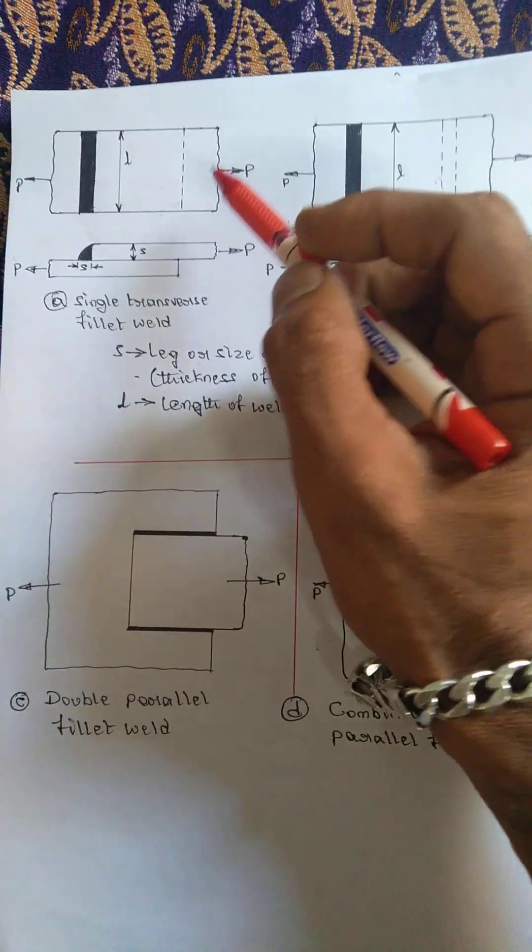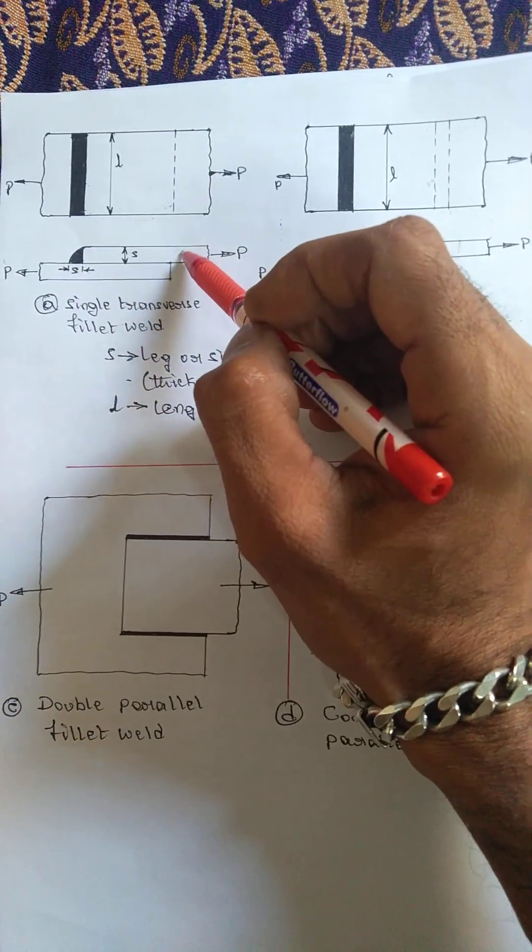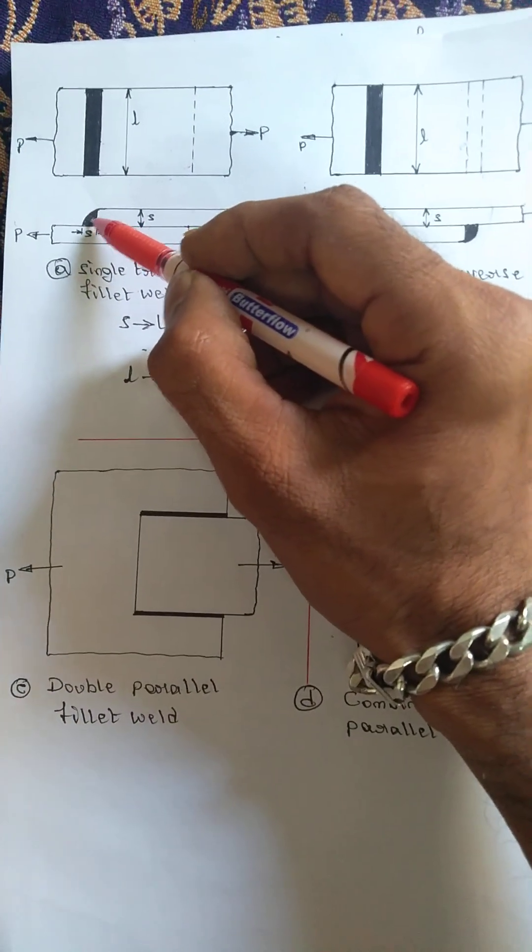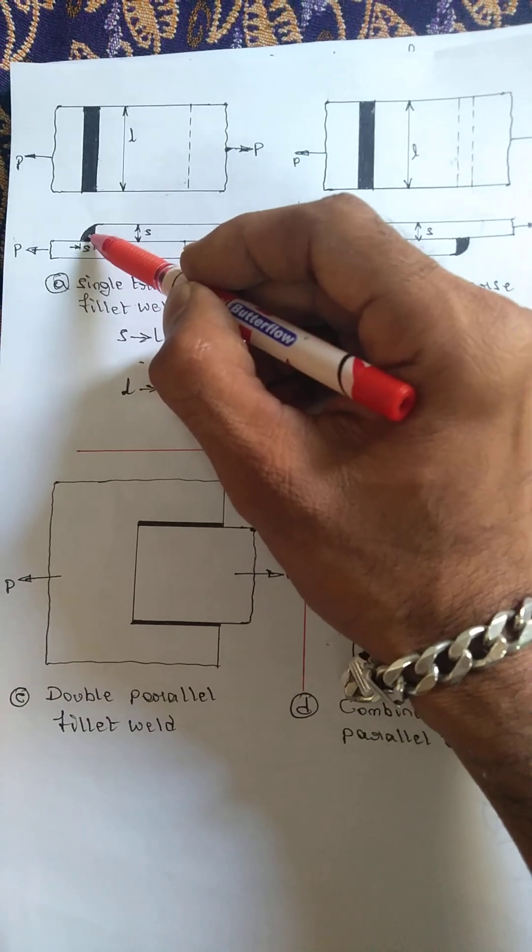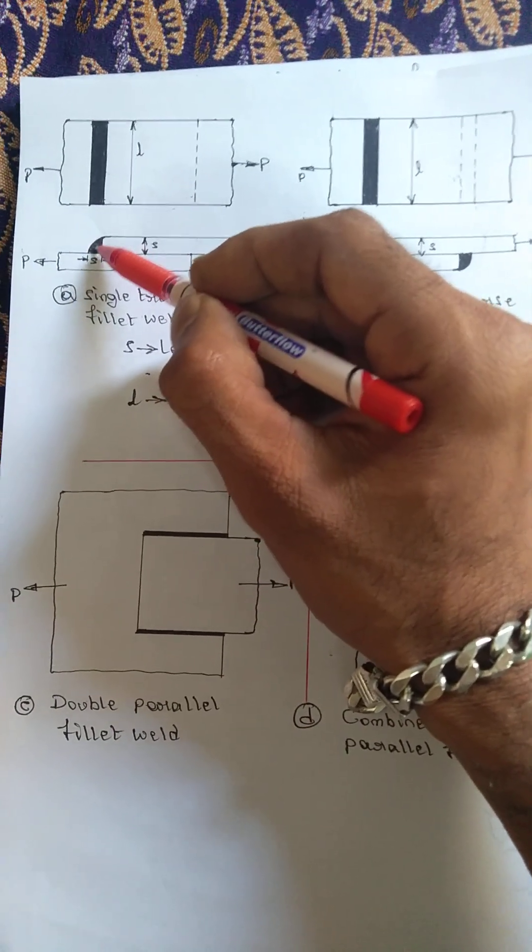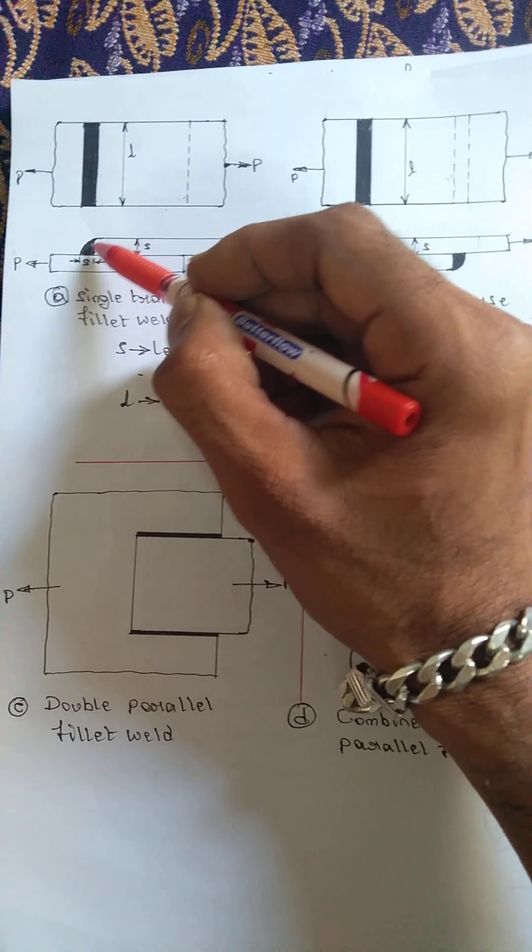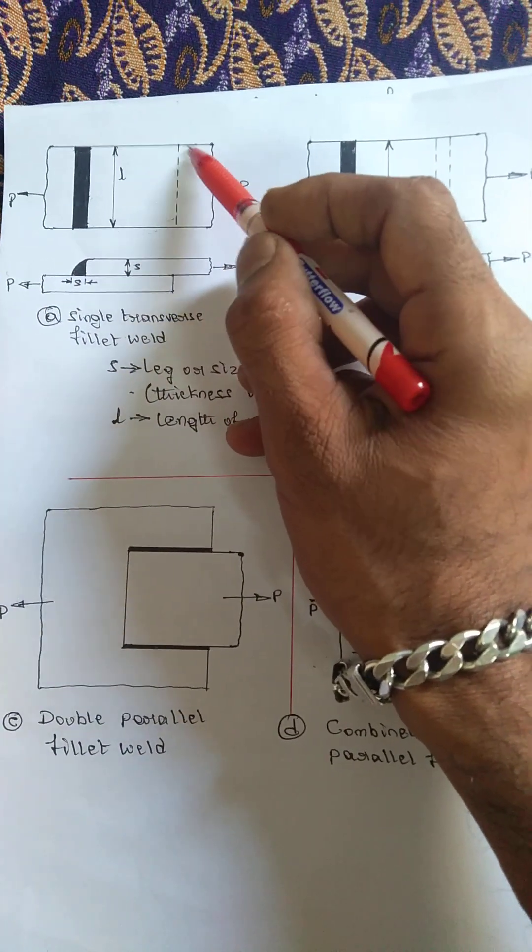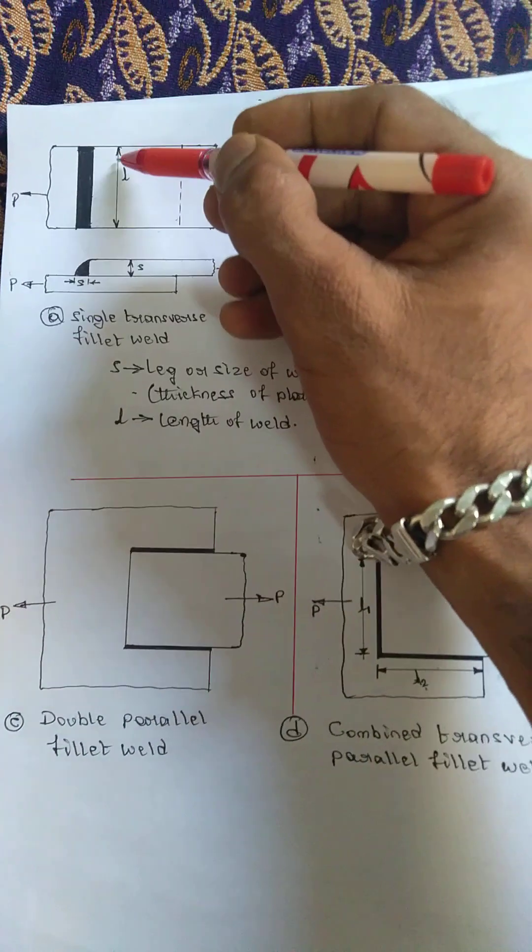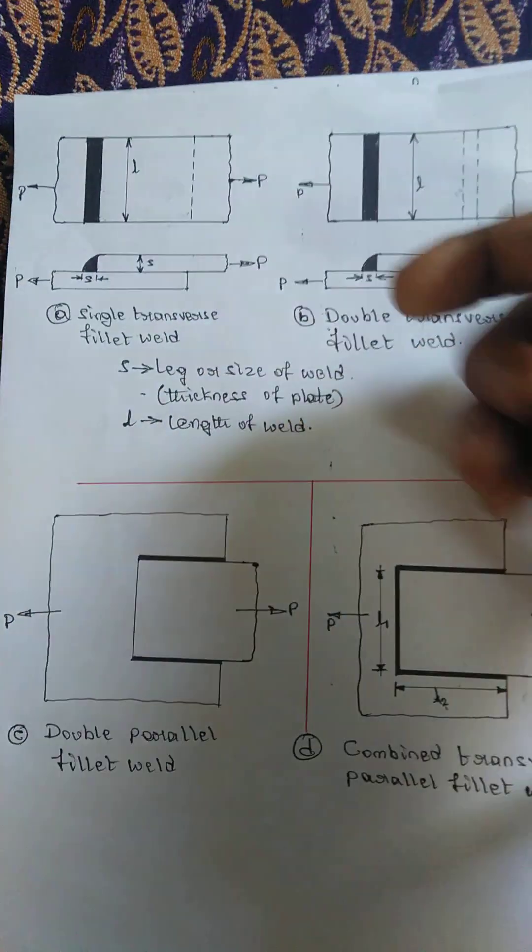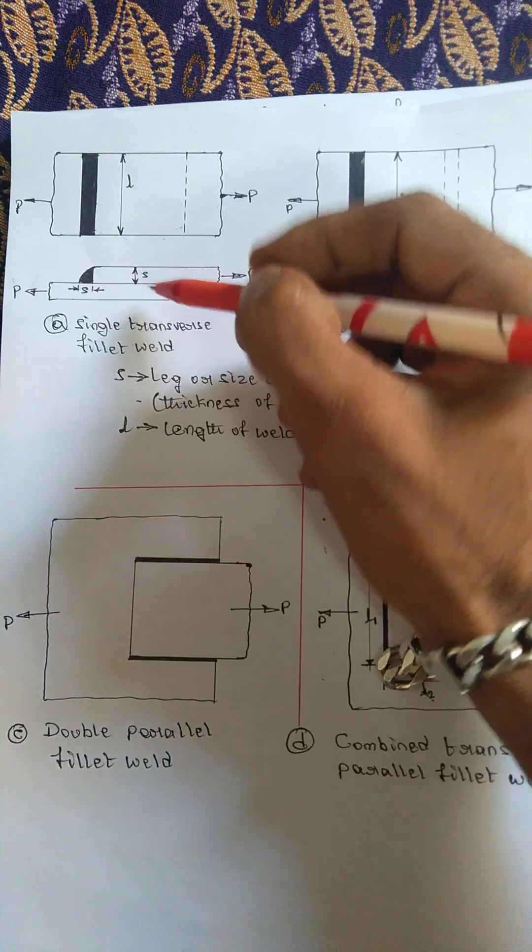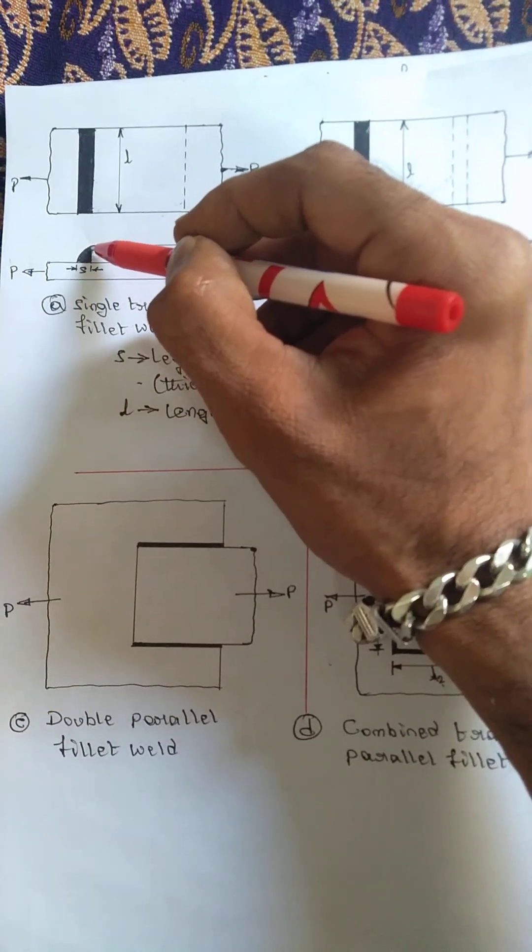These are the two rods or two plates I have taken - plate one, plate two. This is the welded portion when you look at it from the side, and this is top view. This is another plate below the top plate, so this side is welded. This is the thickness of plate 1, this is the thickness of plate 2.